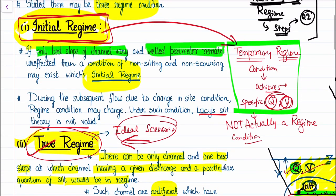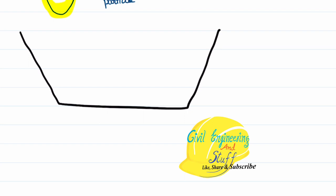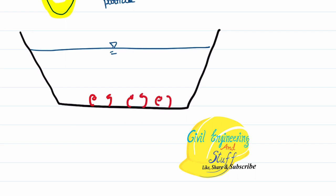Kennedy said that in a channel section, silting and scoring happen because of eddies generated at the bed slope — these eddies are responsible for the silting and scoring phenomena. However, Lacy said that eddies are also generated from the side slope, and these eddies are also responsible for the silting and scoring phenomena — a very prominent observation by Lacy.